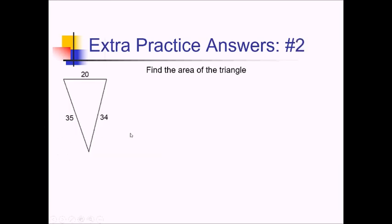To find the area of this triangle, since we have all three sides, we have to use Heron's formula. So we'll start with our semi-perimeter, one half A plus B plus C, equaling S.